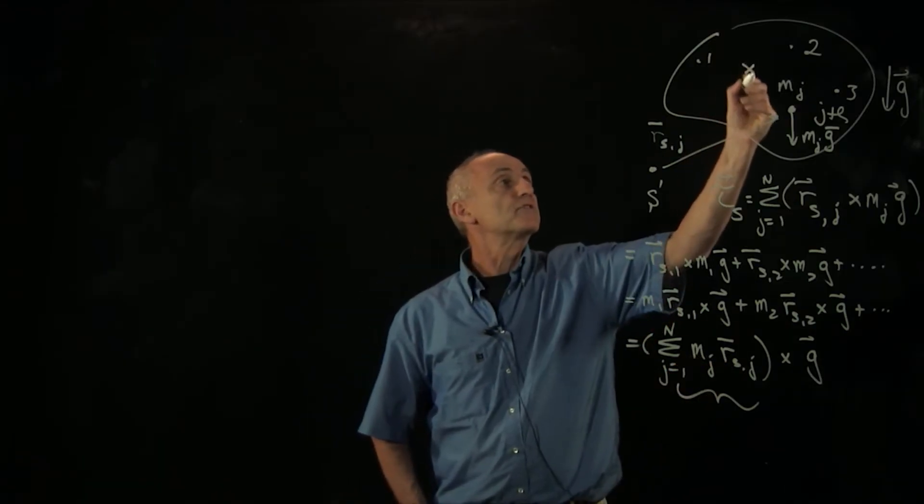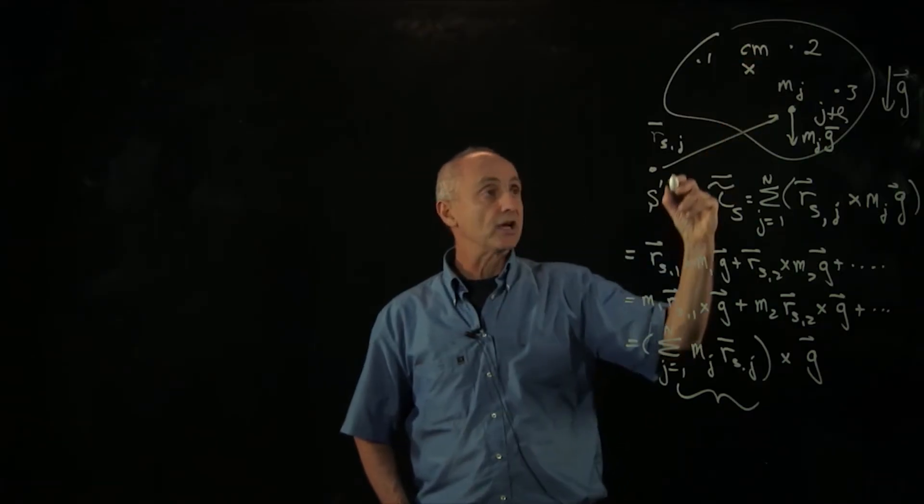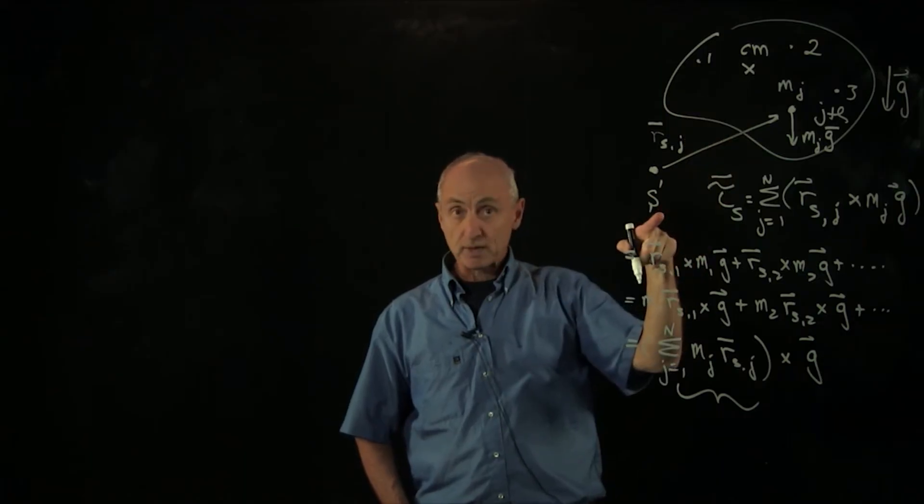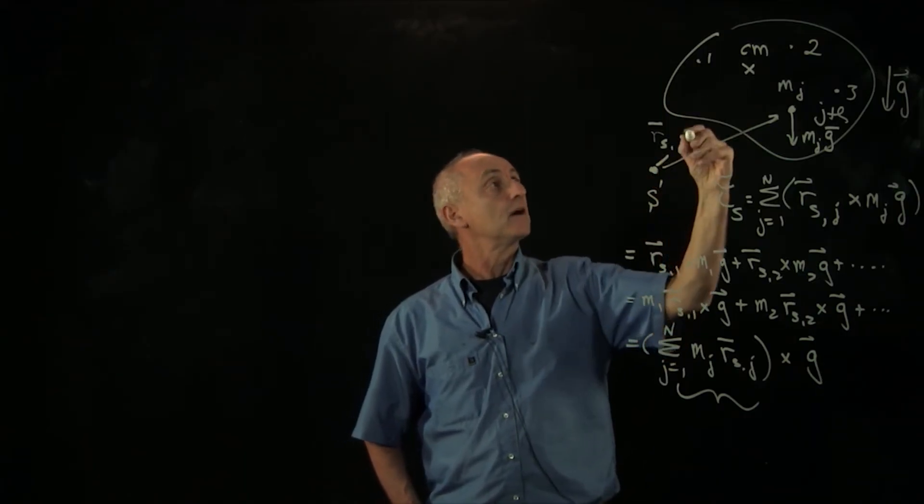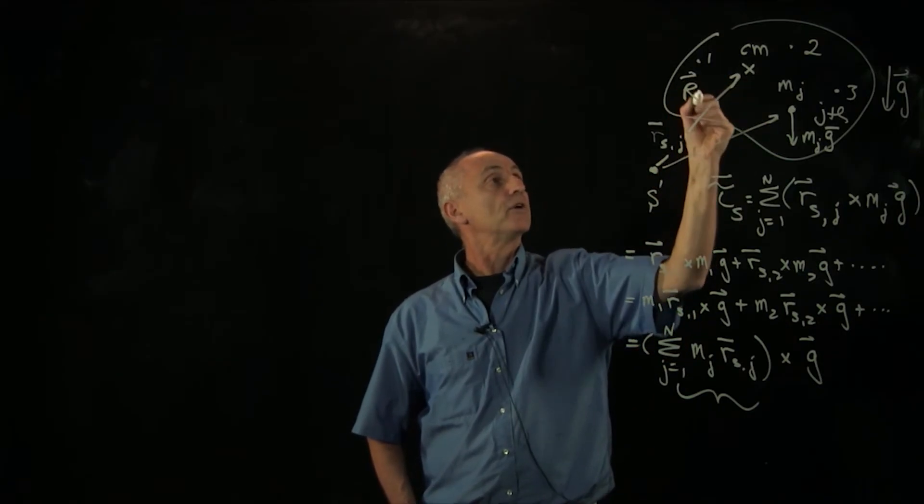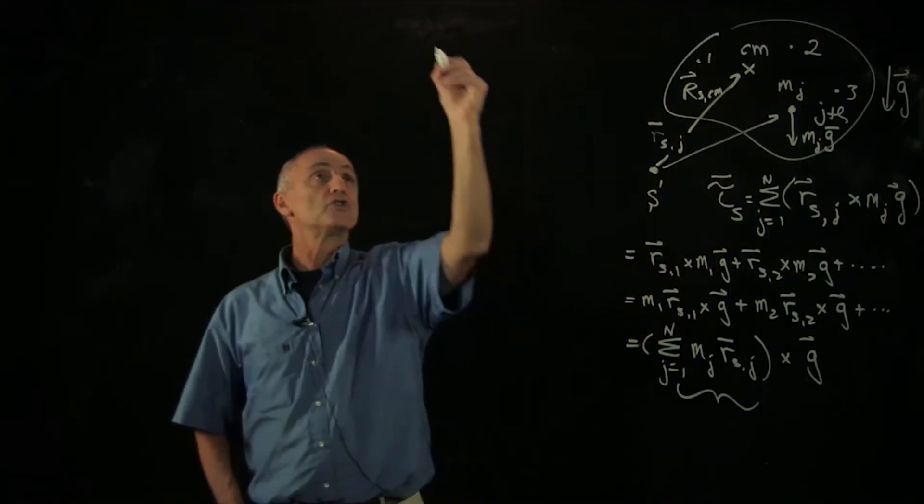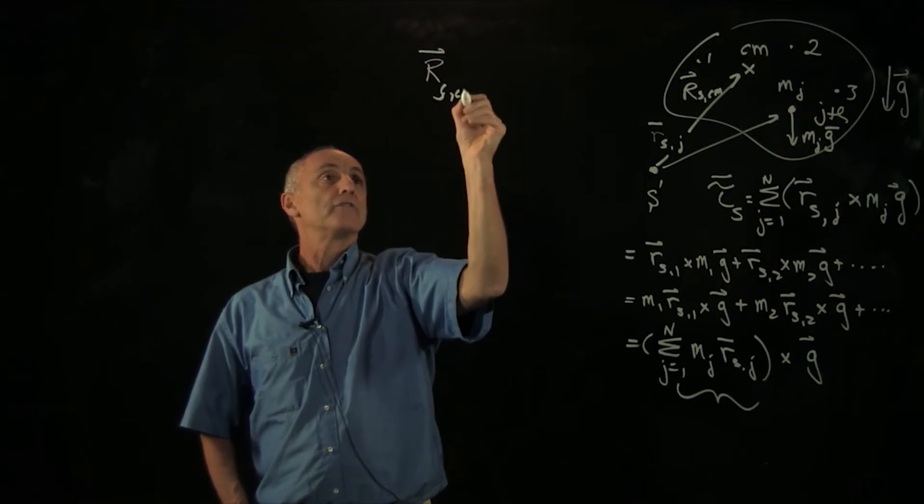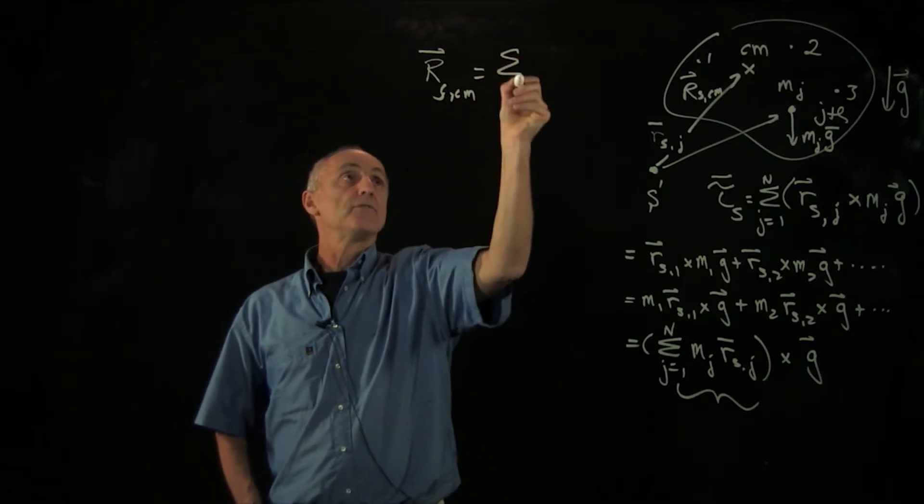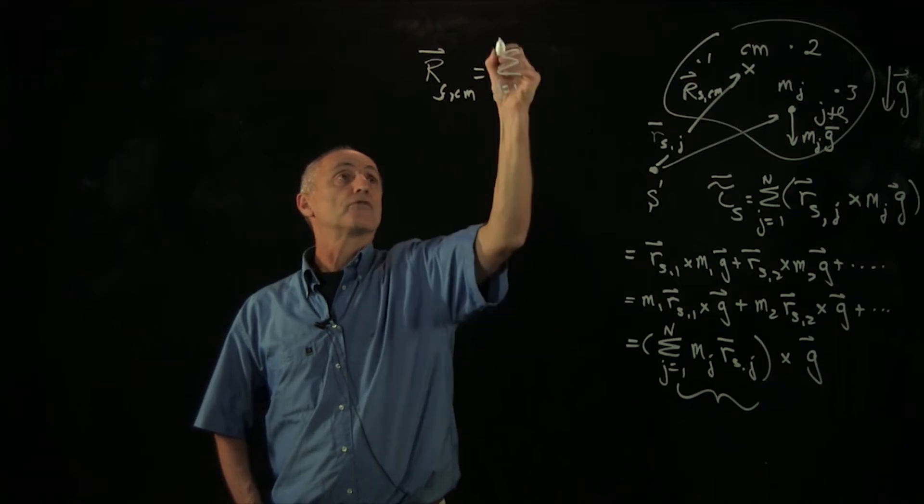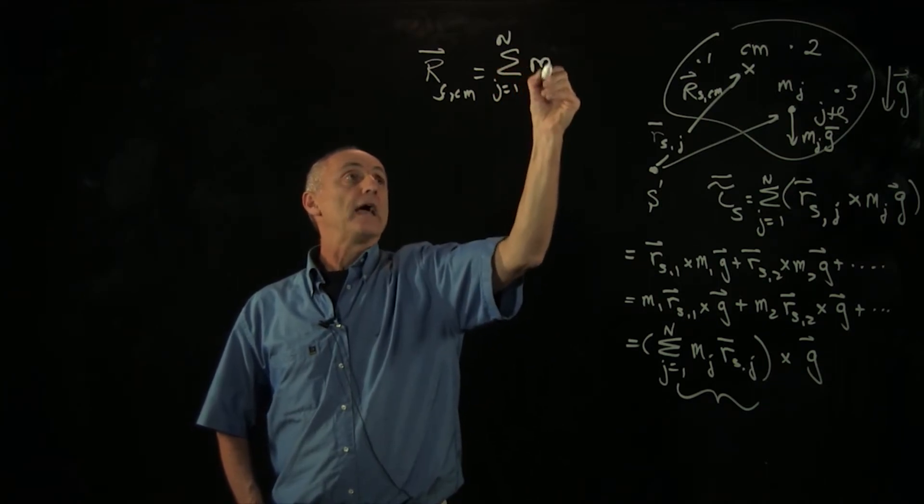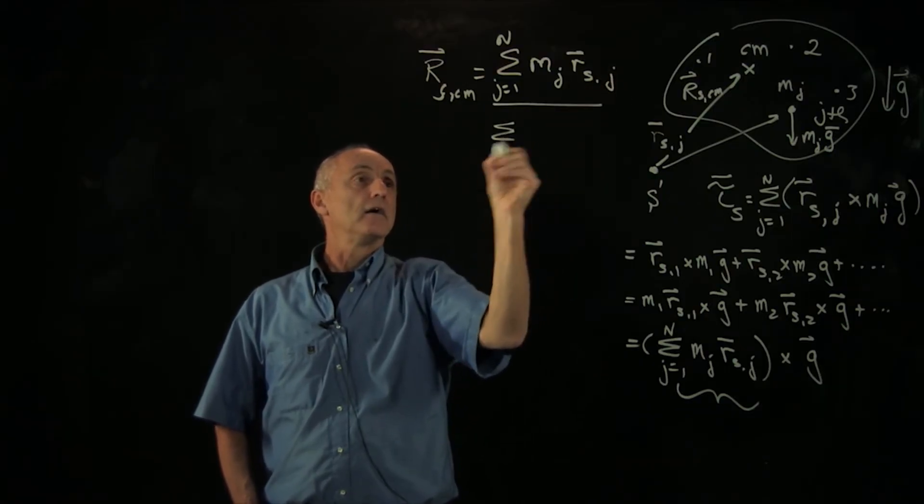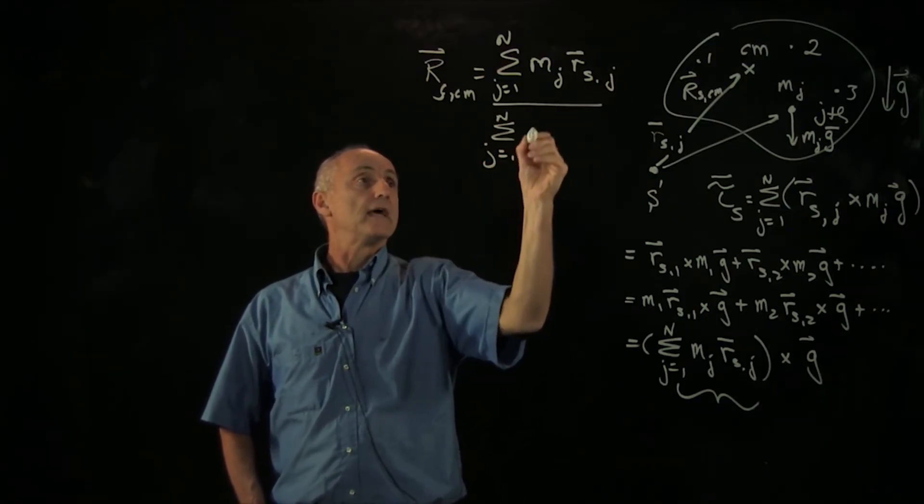Recall that if you have the center of mass of an object, and we want to find out where is the location of the center of mass with respect to point s, then we can calculate this vector rscm by our definition that the location of the center of mass with respect to s is given by the sum, j goes from 1 to n, of mj rsj, and we divide that by the total mass mj.